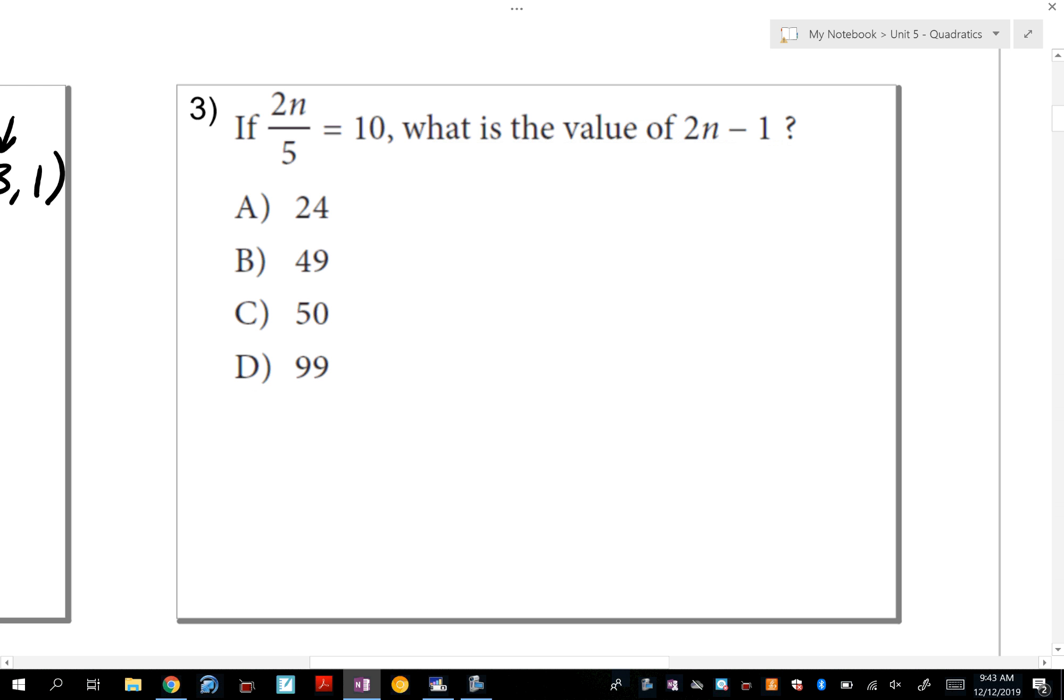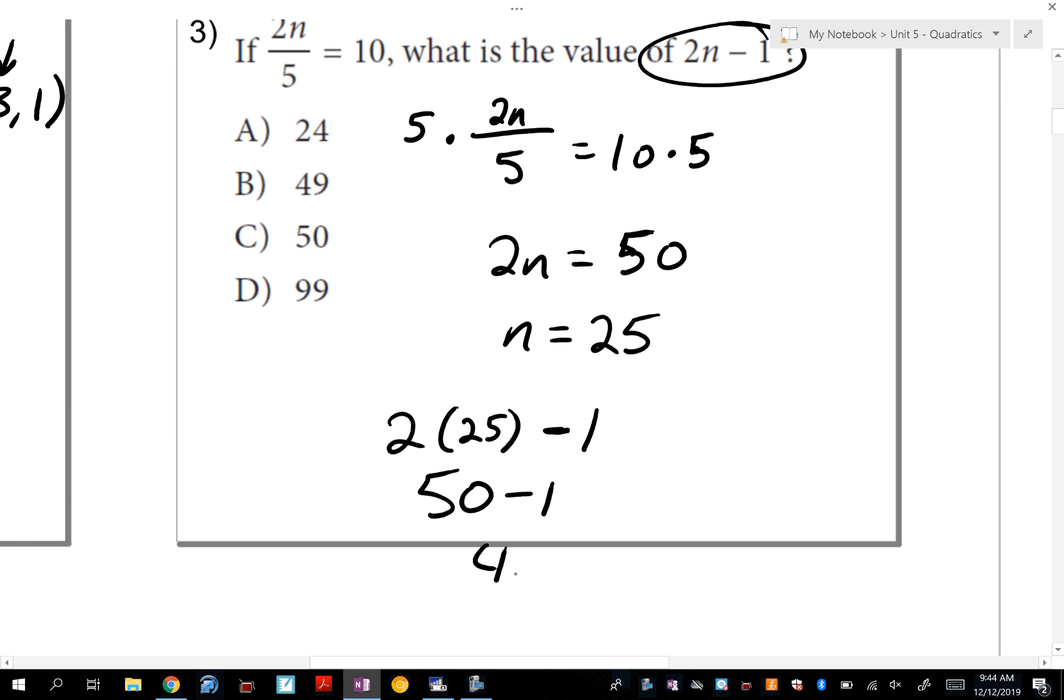Number 3 says if 2n/5 = 10, what is the value of 2n - 1? Well, let's just go ahead and solve this equation. It's being divided by 5, so if you multiply both sides by 5, it will get rid of that division to give you 2n = 50. So then if you divide both sides by 2, you get n = 25. Now, it's not asking for the value for n. It's asking for the value of 2n - 1. So you're going to go ahead and plug in 25 for n into that expression to give you 50 - 1, which is 49, or B.